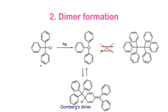When trying to form a dimer by reacting two molecules of triphenyl chloromethane, we might expect a symmetric dimer where all benzene rings are arranged in a circular fashion around the two central carbons — but this does not happen. Here I want to introduce the prominent scientist Moses Gomberg. He proposed that dimer formation occurs not between the two central carbons, but between one central carbon and a terminus of one of the benzene rings of the other molecule. This is known as Gomberg's dimer.